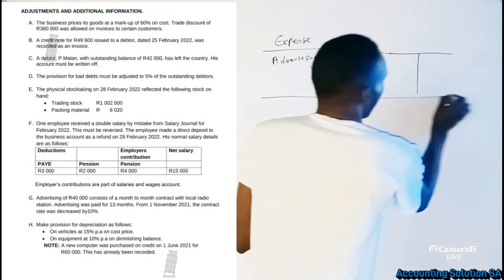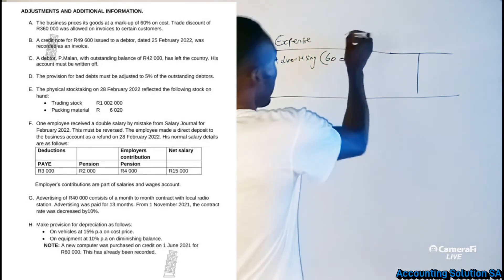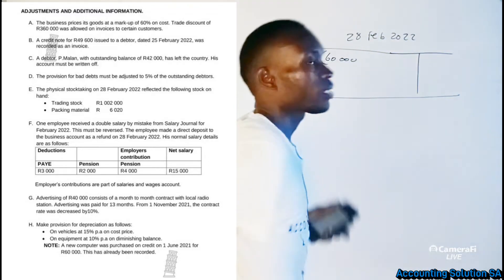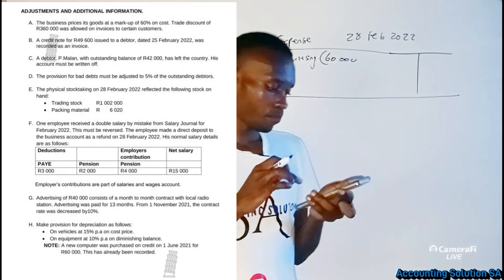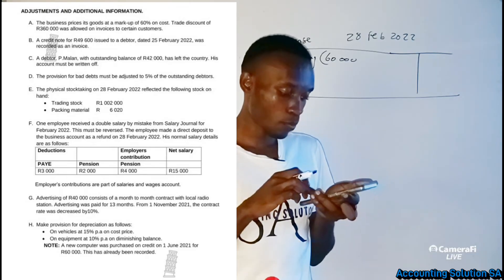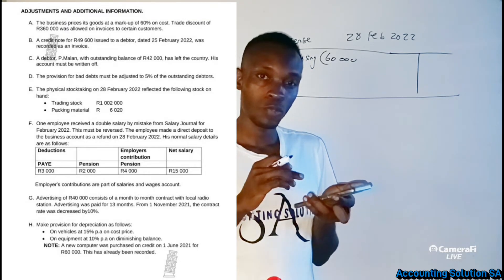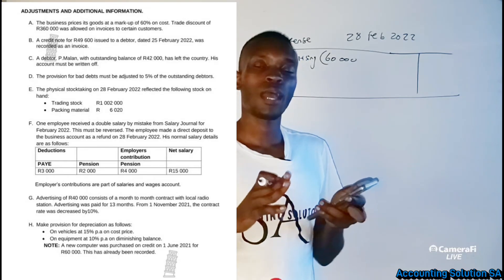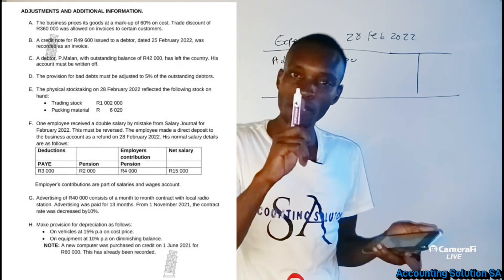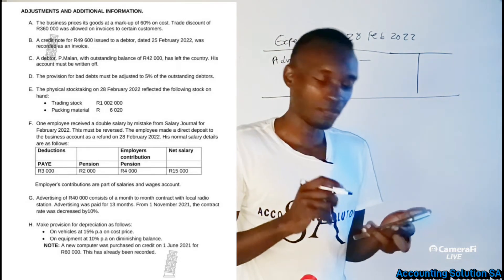Our year is ending 28 February 2022, which means it started 1 March 2021. They said advertising of 40,000 consists of a month-to-month contract with a local radio station, and advertising was paid for 13 months. In accounting, under the income statement, you have to record everything for only 12 months, which means there is one month we need to subtract — we don't record advance payments under the income statement.